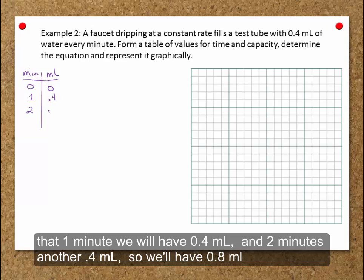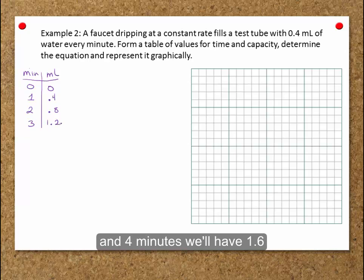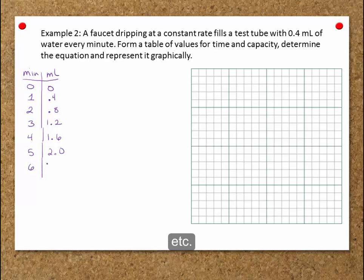At two minutes, another 0.4 milliliters, so we will have 0.8 milliliters. At three minutes, another 0.4, so we'll have 1.2 milliliters. At four minutes, we will have 1.6. At five minutes, we will have 2 milliliters. Six minutes will give us 2.4, etc.